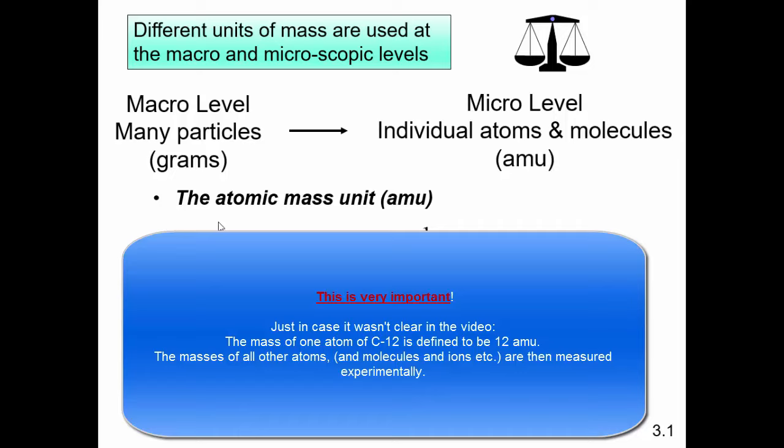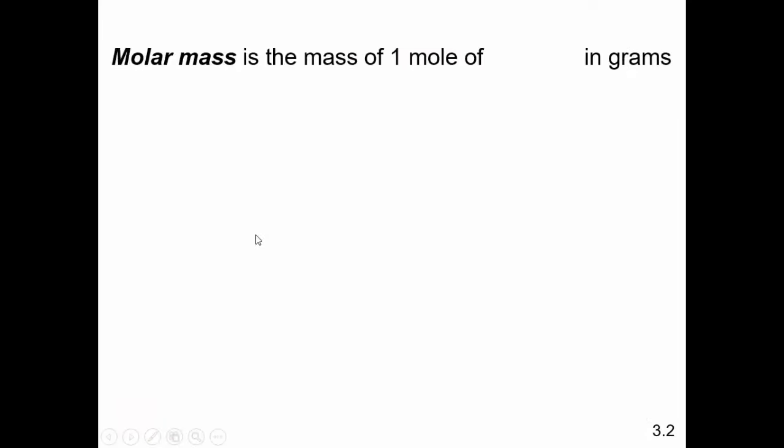But the AMU scale is kind of theoretically defined in terms of the mass of atoms of carbon-12. Then, practically used to figure out the masses of everything else, all these other atoms and molecules, by comparison to the mass of carbon-12. Hopefully that makes sense. Okay, so now the concept of molar mass. We've already kind of defined that.